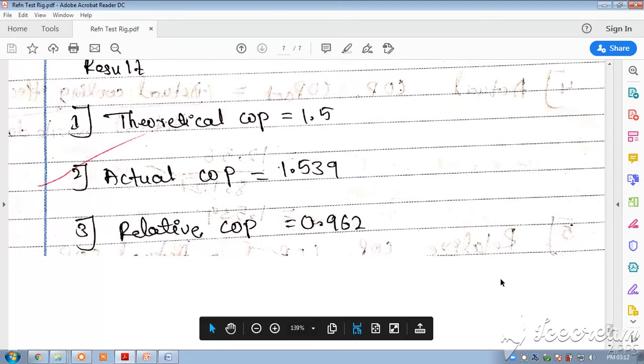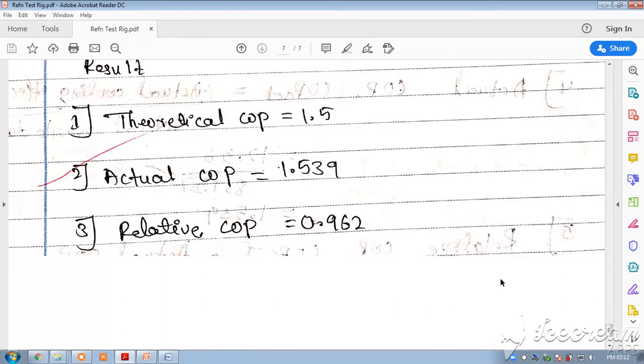The COP, coefficient of performance, of the vapor compression refrigeration system varies from somewhere between 2 to 5 - the best being 5 and the least being 2. That you should know.